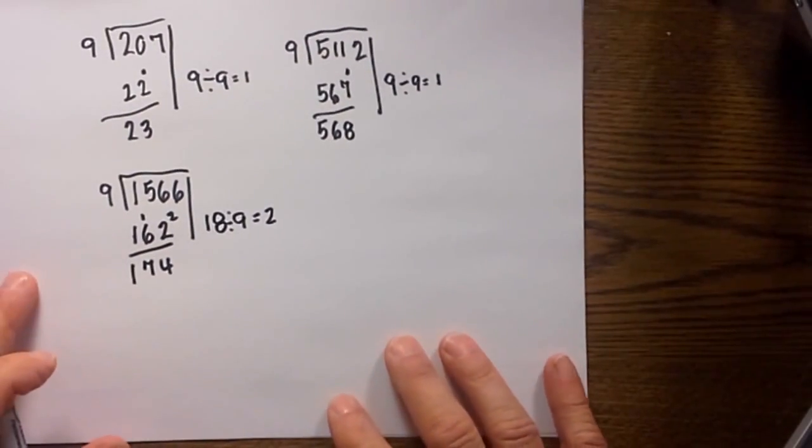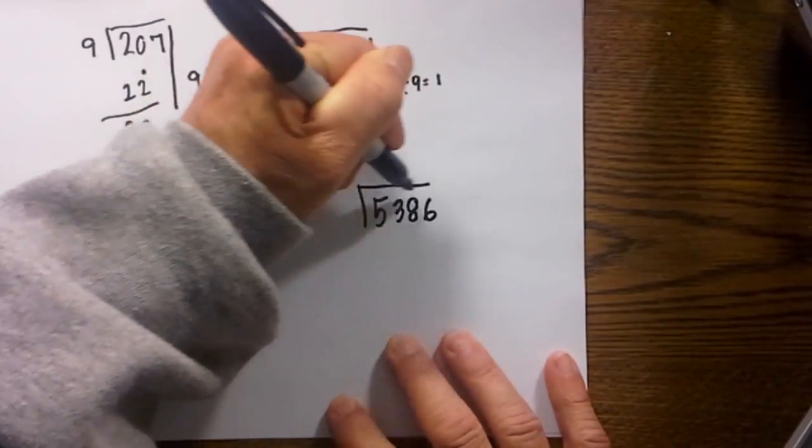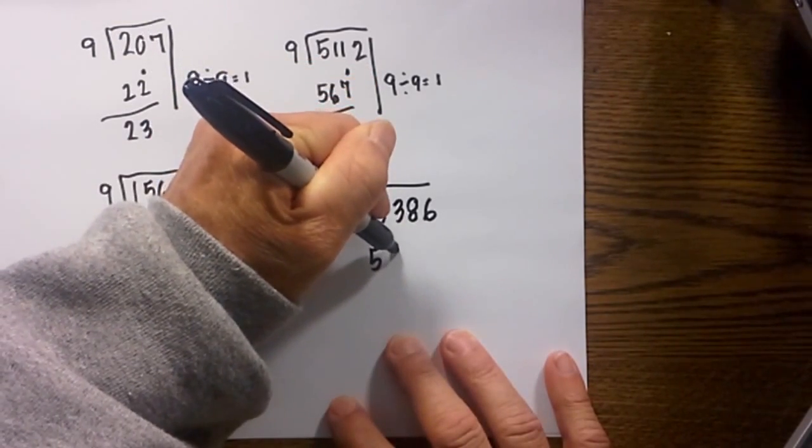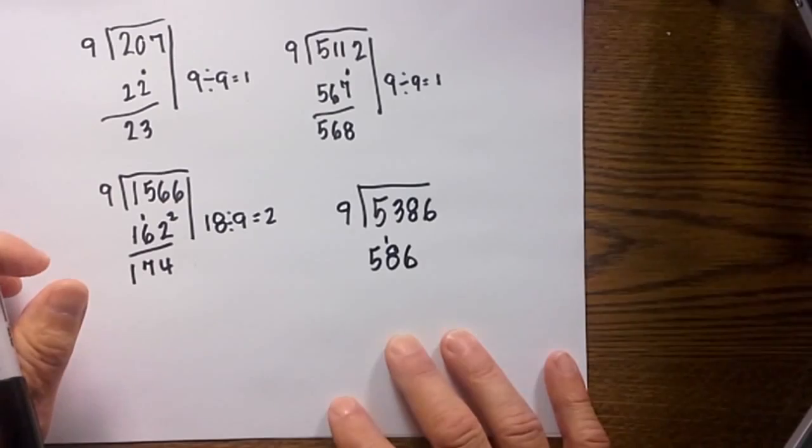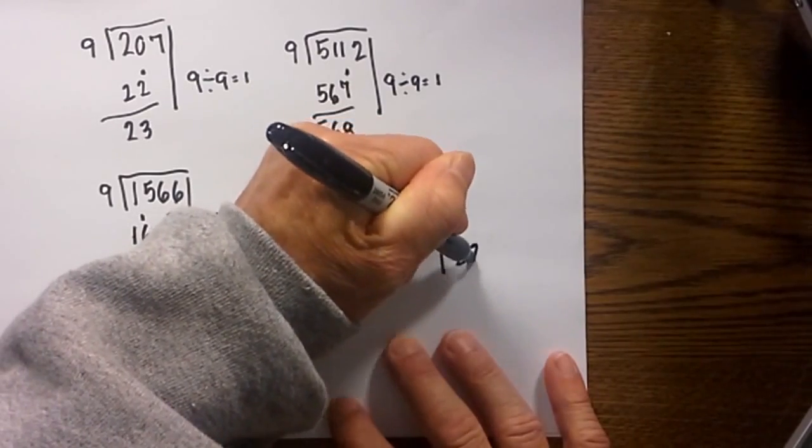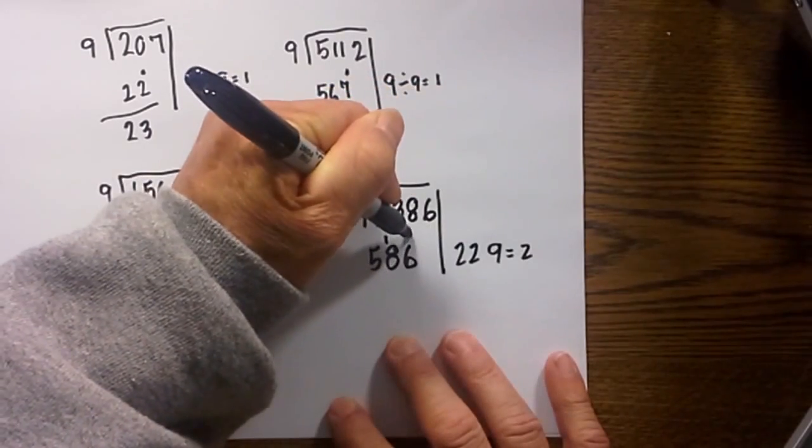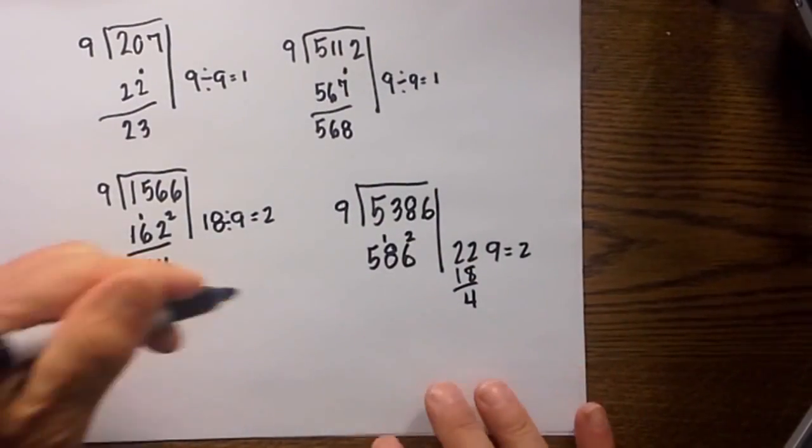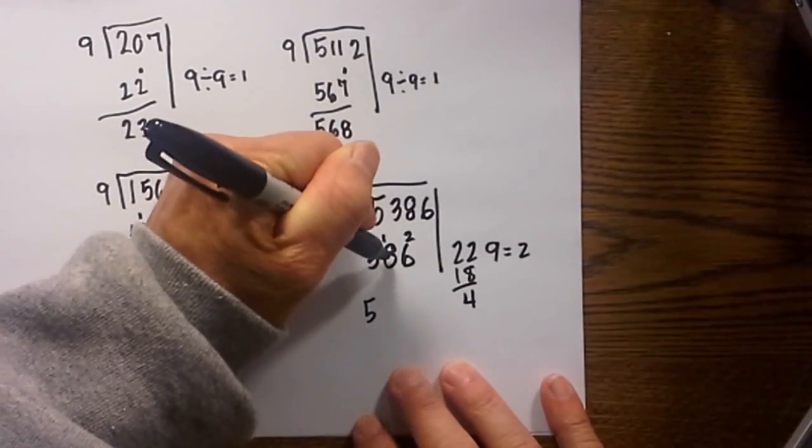Let's do a couple more. This next one: 5,386 divided by 9. Bring the 5 down, 5 plus 3 is 8, 8 plus 8 is 16, so I will bring the 1 over here. 16 plus 6 is 22. 22 divided by 9 equals 2, which is 18. 22 minus 18 is 4, so now we have a remainder. Let's total this and then I'll talk about what you can do with the remainder.